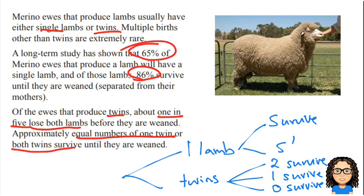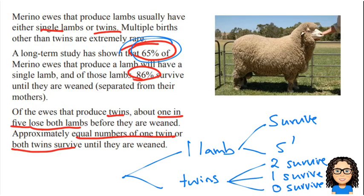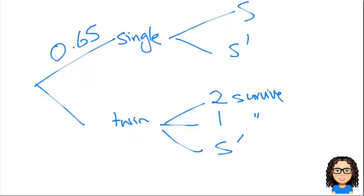65% of ewes will have a single lamb. Then of those lambs — of that 65% — 86% will survive until they're weaned. So from the single branch, 86% survive. That means we can work out the other number: 86% and 14%. And the first split is 65% and 35%, which have to add up to one.